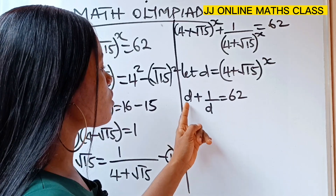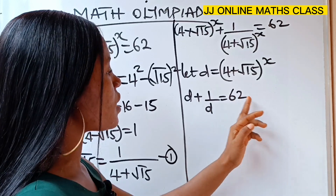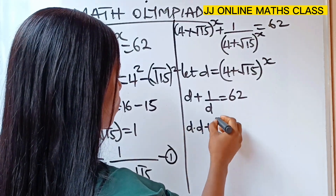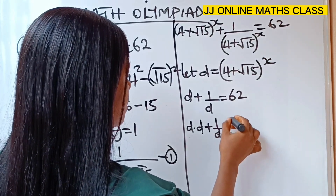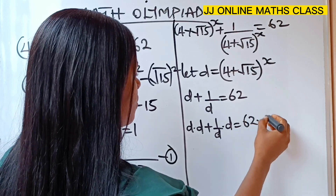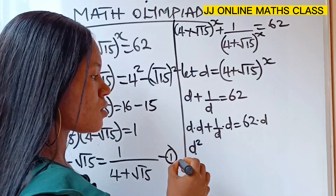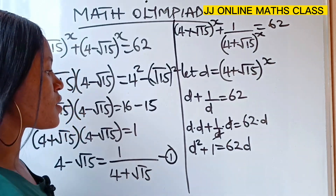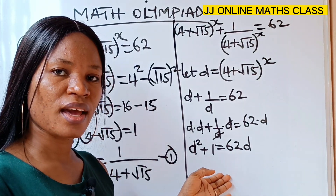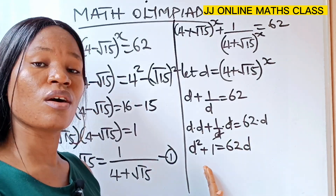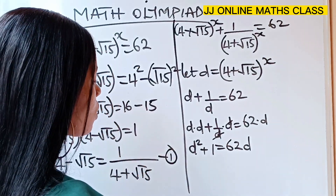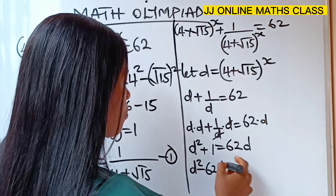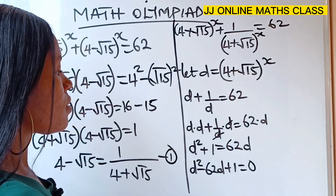We need to get a quadratic equation, so we are going to multiply each term by d. We have d times d plus 1 over d times d, equal to 62 times d. D times d gives us d squared, and the d's cancel to give 1, so we have d squared plus 1 equals 62d. Bringing everything to one side gives us the quadratic equation: d squared minus 62d plus 1 equals 0.